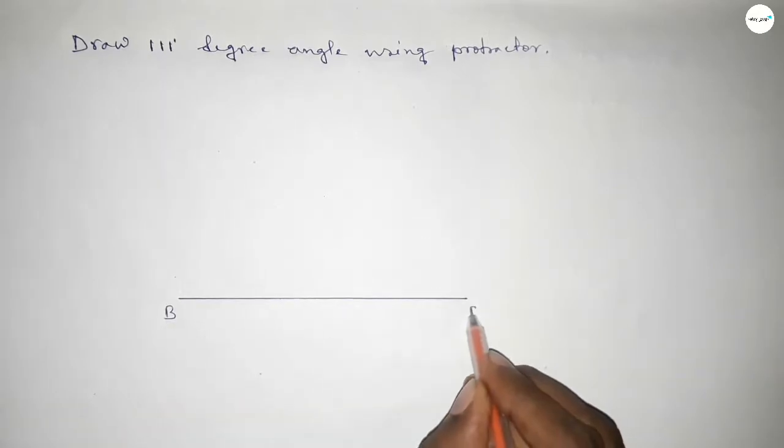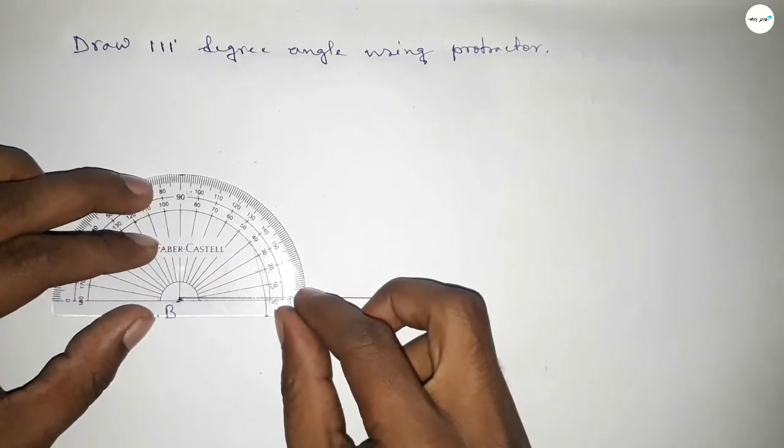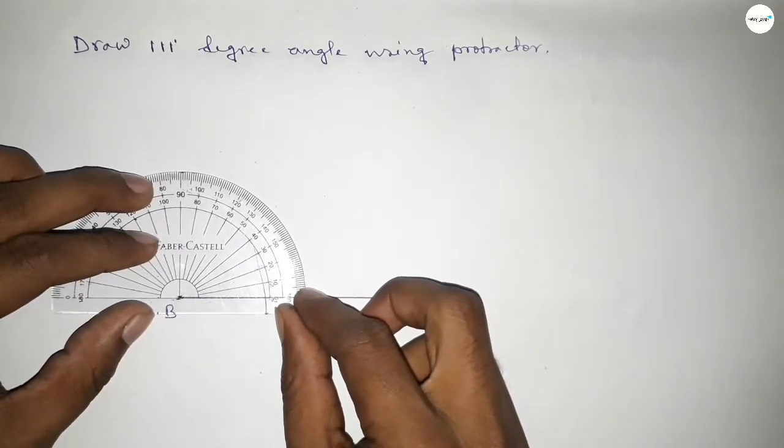Next, taking here B point and here C point. Now putting the protractor on the point B perfectly, then counting the angles.